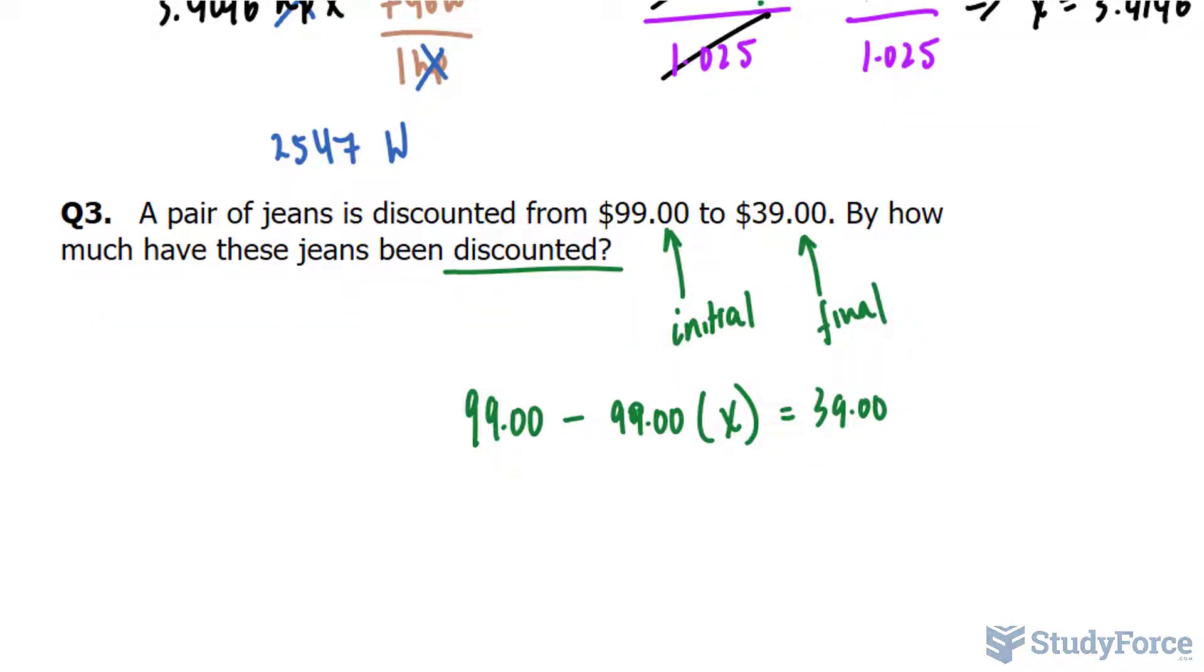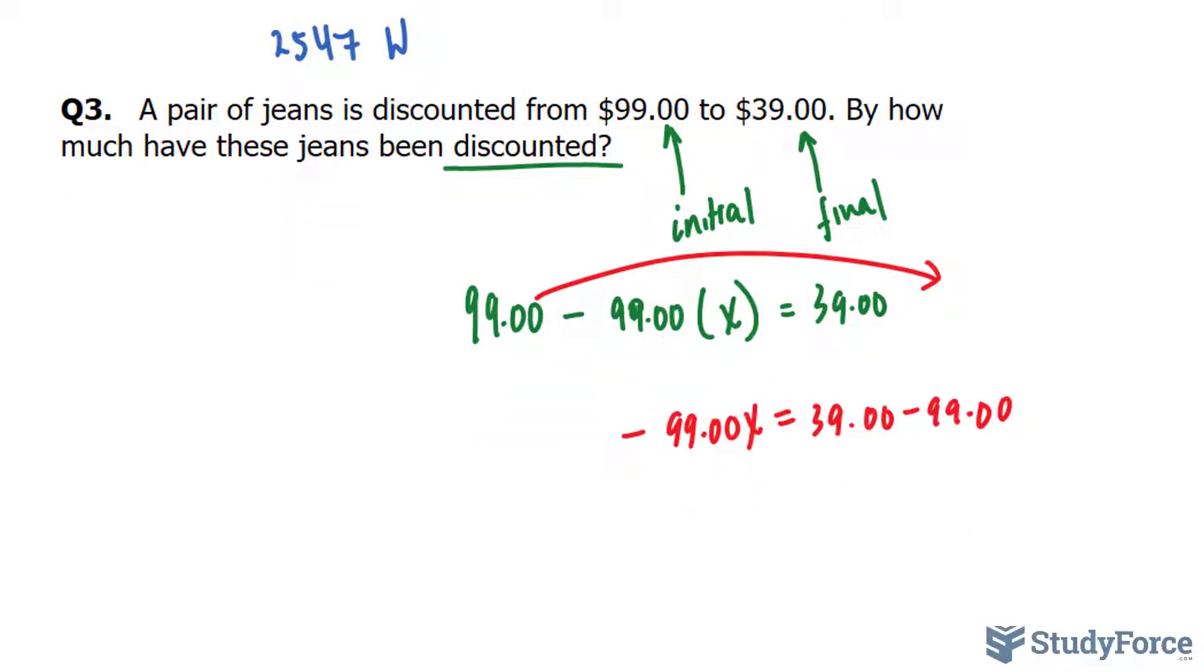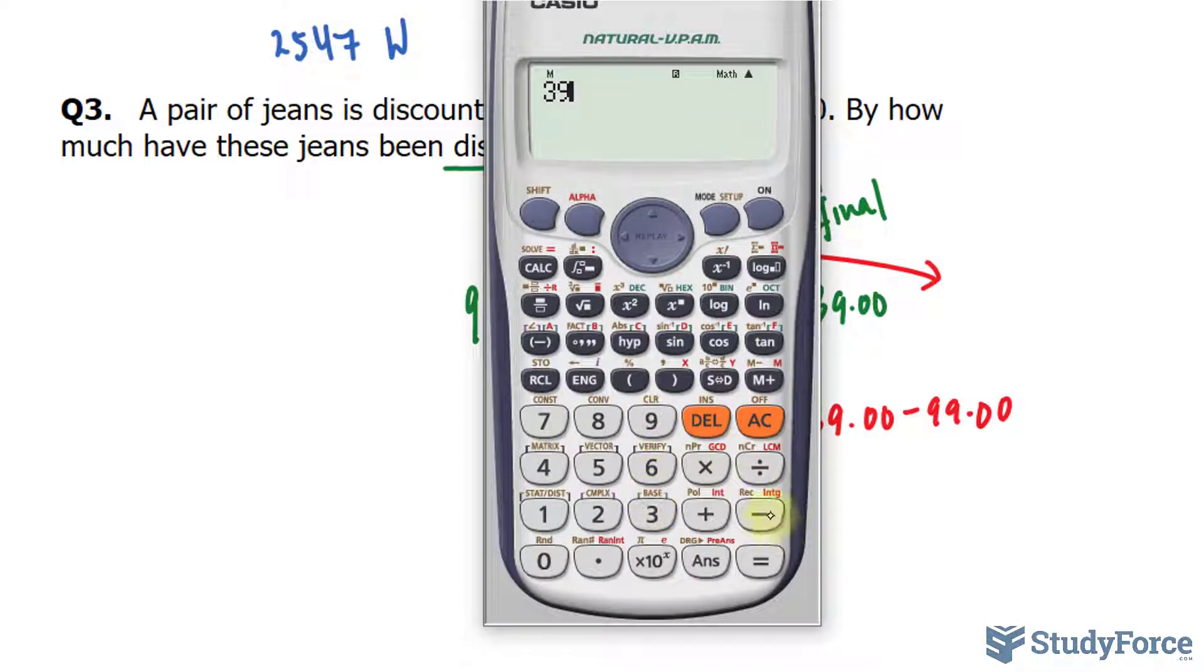We'll solve for x the same way we did in question number one. We'll bring that 99 over. We get 39 minus 99, that should give you a negative number. And negative 99.00x on the left side. So 39 minus 99 makes negative 60.